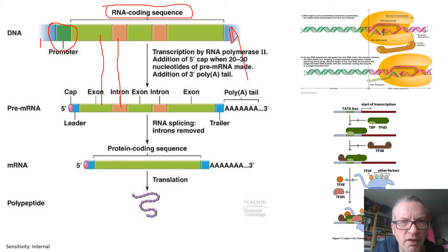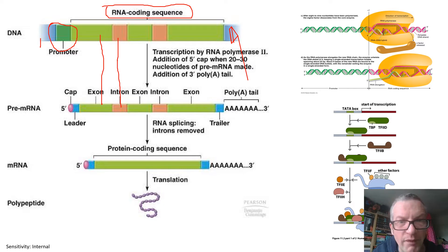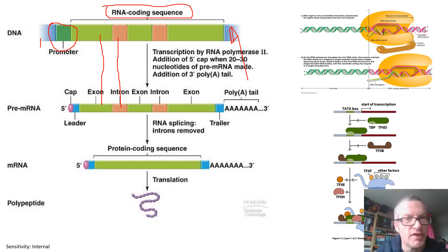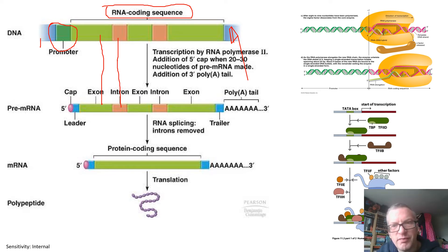All of these elements are part of the gene, but only the light green elements are the bits which will be transcribed into messenger RNA and then translated into protein. However, all of the other parts are important in the process. First of all, the promoters — we talked about several promoters in the transcription process.